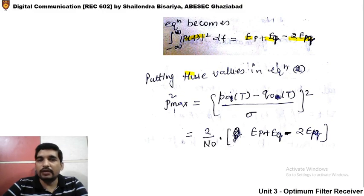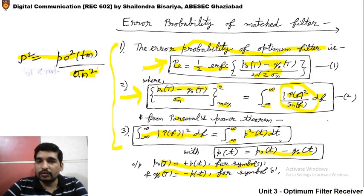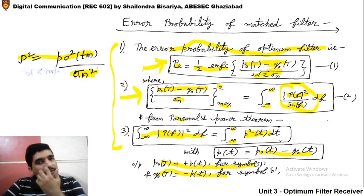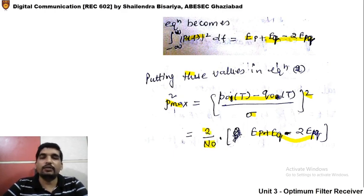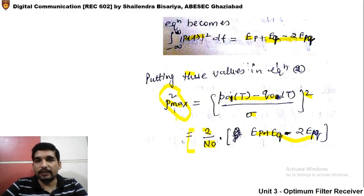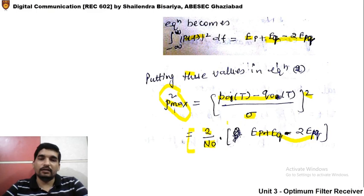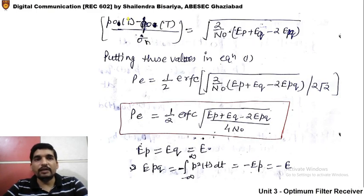Putting these values into the second equation — [(p₀(t) − q₀(t)) / σn]²_max = Ep + Eq − 2·Epq — and since we assume white Gaussian noise, σn² = N₀/2. Therefore, p²_max = [(p₀(t) − q₀(t)) / σn]² equals (Ep + Eq − 2·Epq) / (N₀/2). So [p₀(t) − q₀(t)] / σn = √[2/N₀ · (Ep + Eq − 2·Epq)].